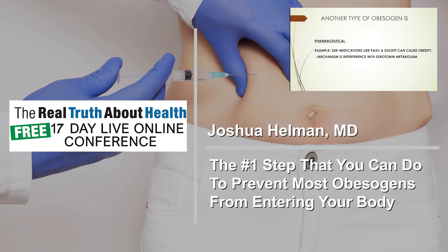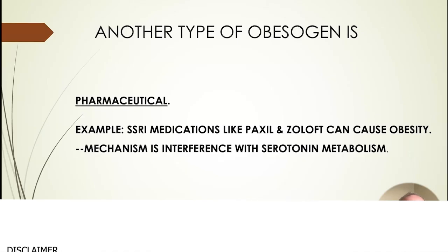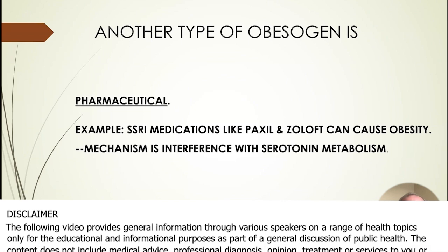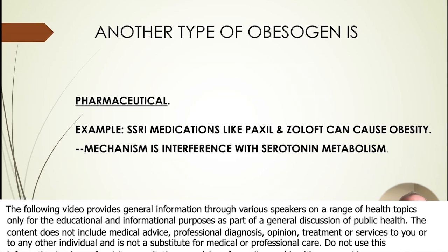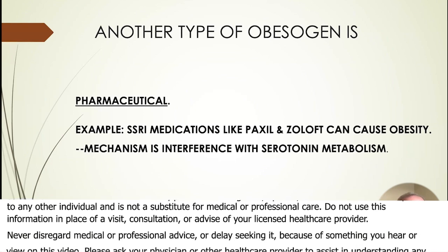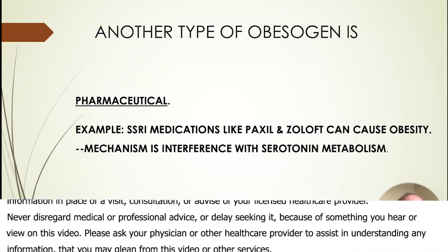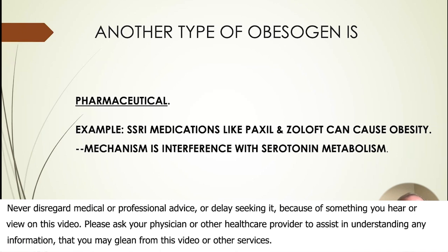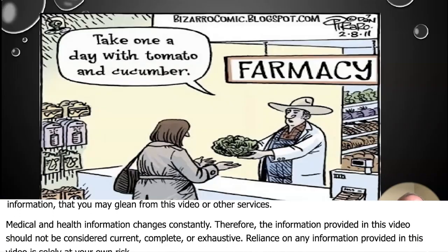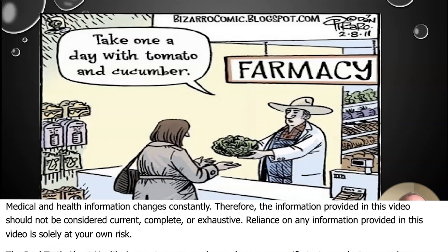Another example of obesogens is pharmaceuticals. SSRIs like Paxil and Zoloft can cause obesity, and the mechanism is interference with serotonin metabolism. SSRIs are not the only medicines that cause obesity — that's just one type.